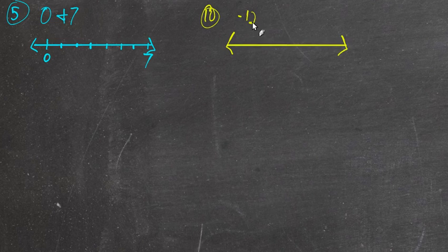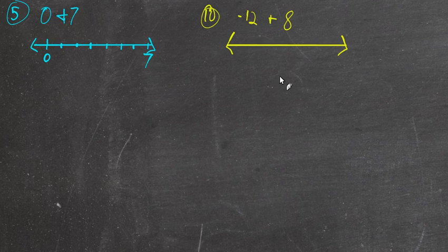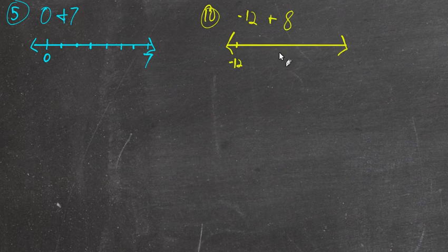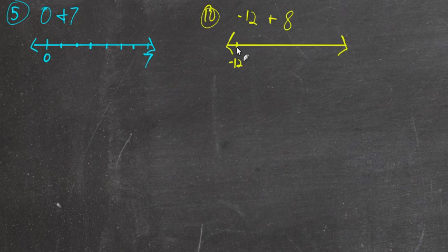We're going to have to make sure we have enough room for all this, so we'll make this be negative 12. That doesn't mean this has to be 12 and this be 0 — that doesn't have to be that way. 0 can be anywhere; it doesn't have to be right in the middle. If we know this end is 8, that means we need 12 marks up to 0 somewhere in here and then 8 up to here.